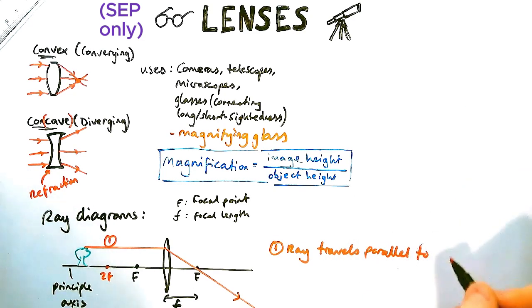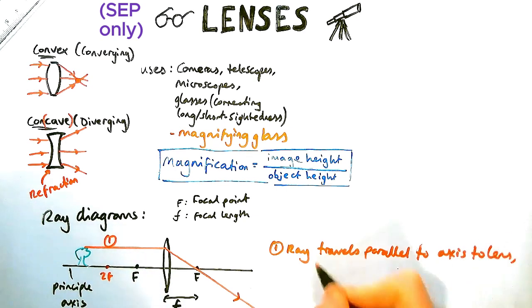Parallel meaning in the same direction as. Then it travels through F, the focal point or the focus on the other side of the lens.